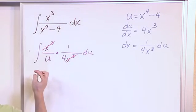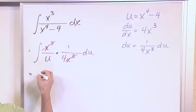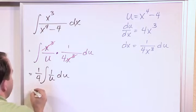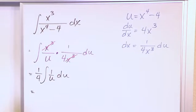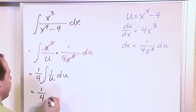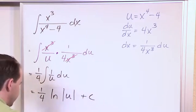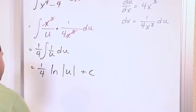And then finally what we're going to have is the one-fourth is going to come out of the integral, integral 1 over u du. And now we know that the integral of 1 over u is, so we have one-fourth natural log absolute value of u plus a constant.